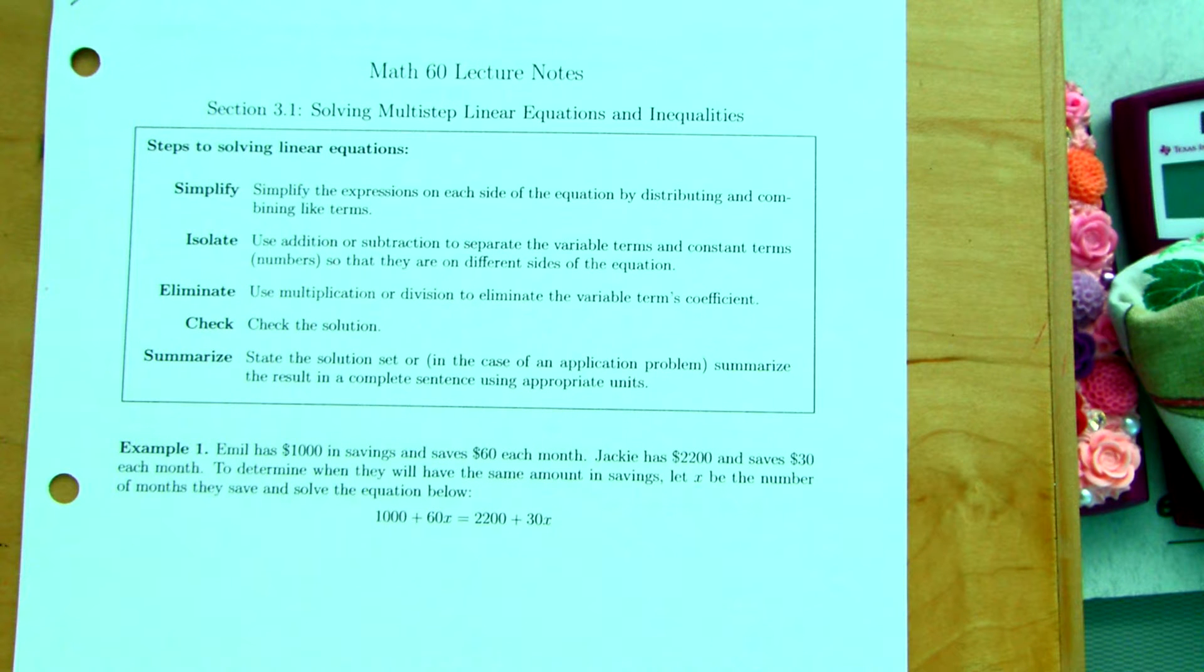So, the steps to solving a multi-step equation. The other ones we were doing before were one and two-step. For multi-step, we want to simplify the expression. We were just doing that in the last section, simplifying expressions using different properties. What were some of the properties we were using to simplify?